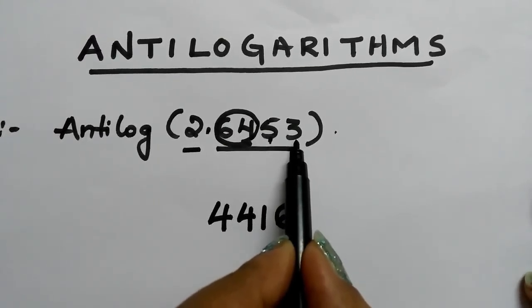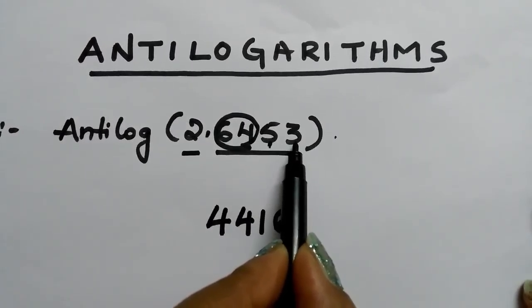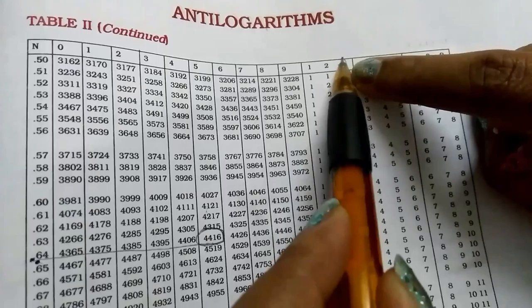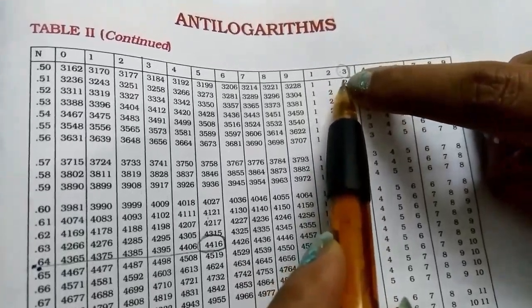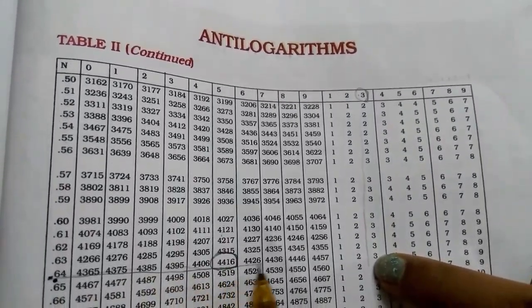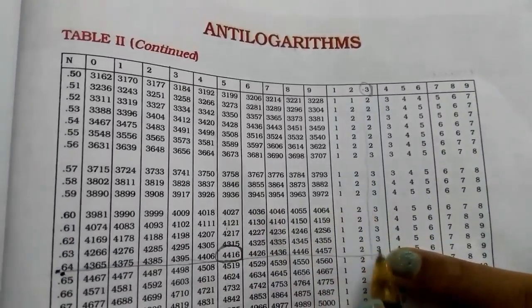Next number is 3. See the mean difference under 3. This is the mean difference 3. Under that 3, see here, this is 0.64. Under that 3, the value is 3.